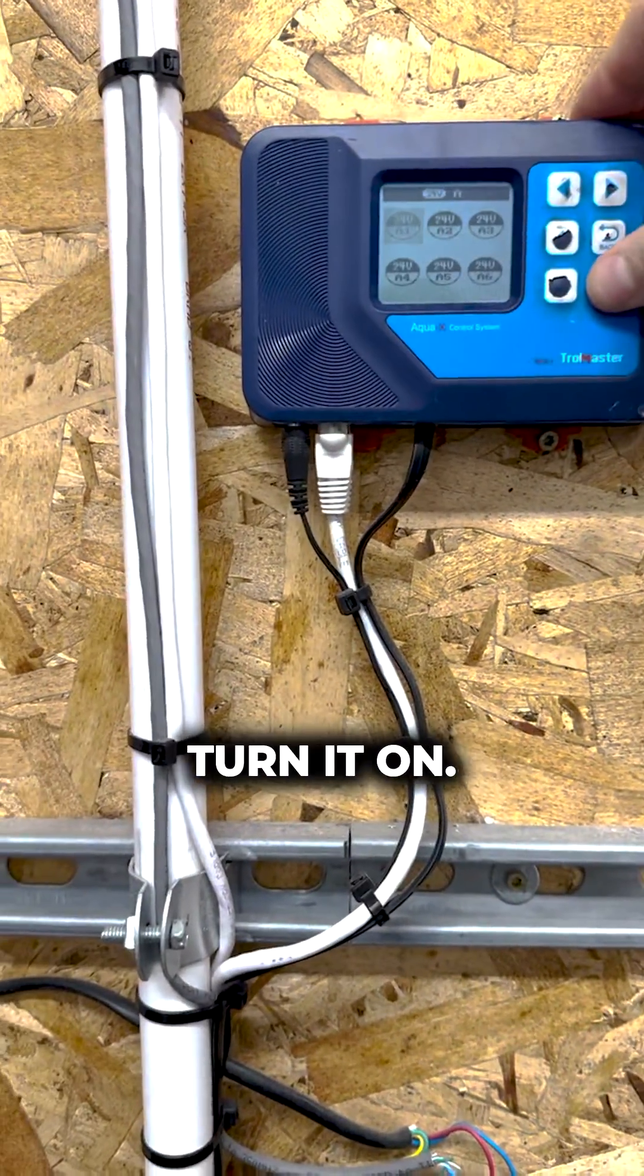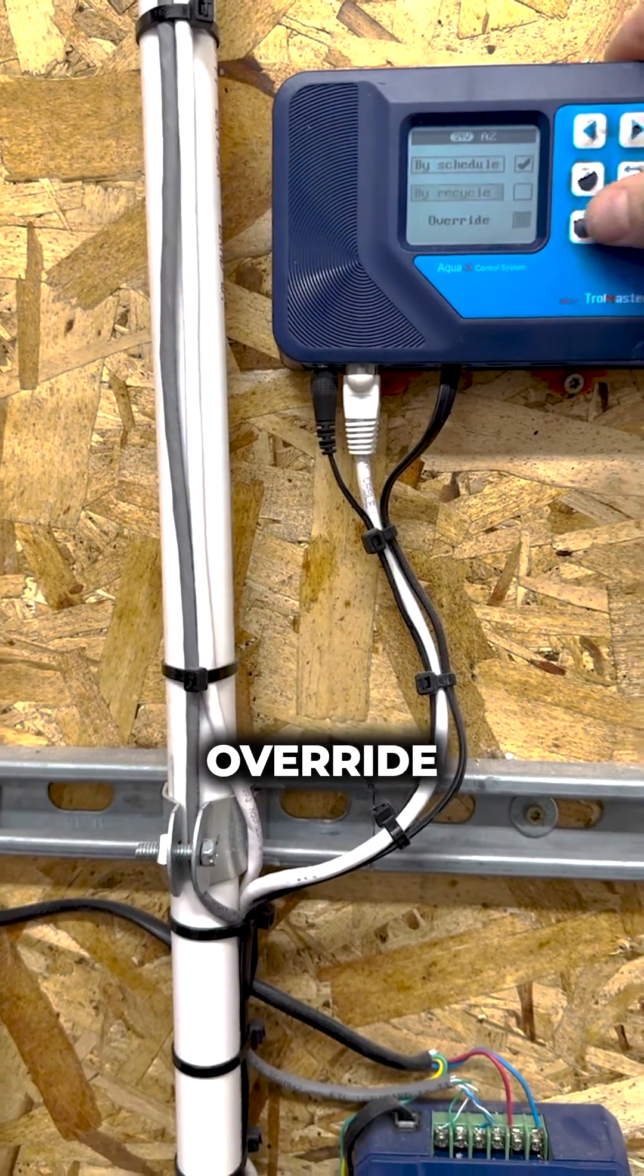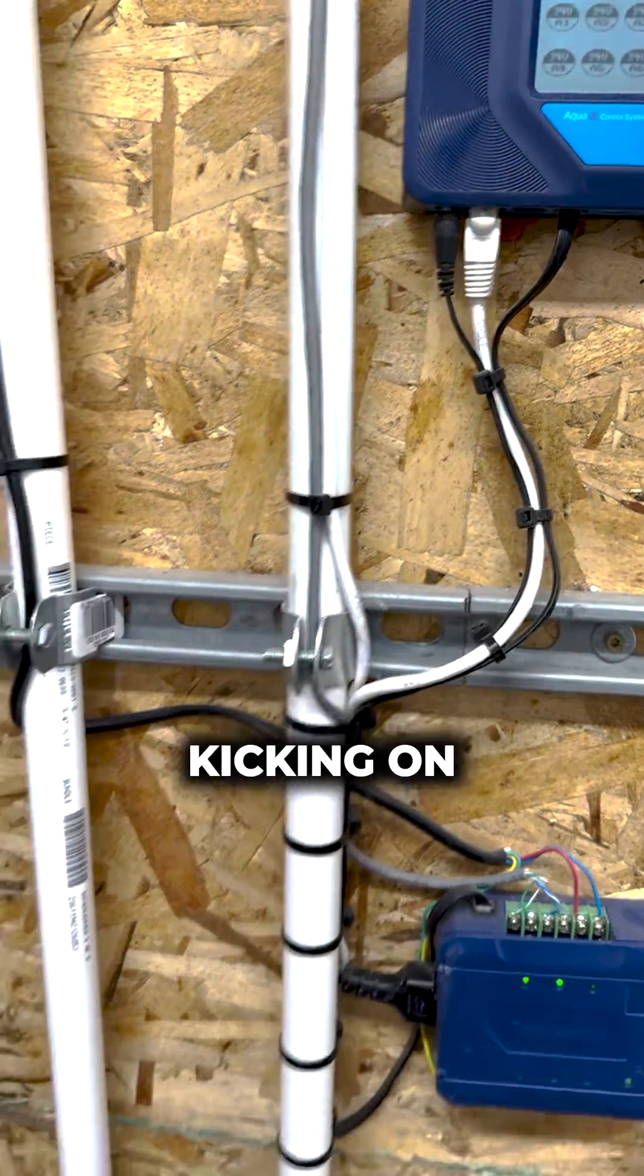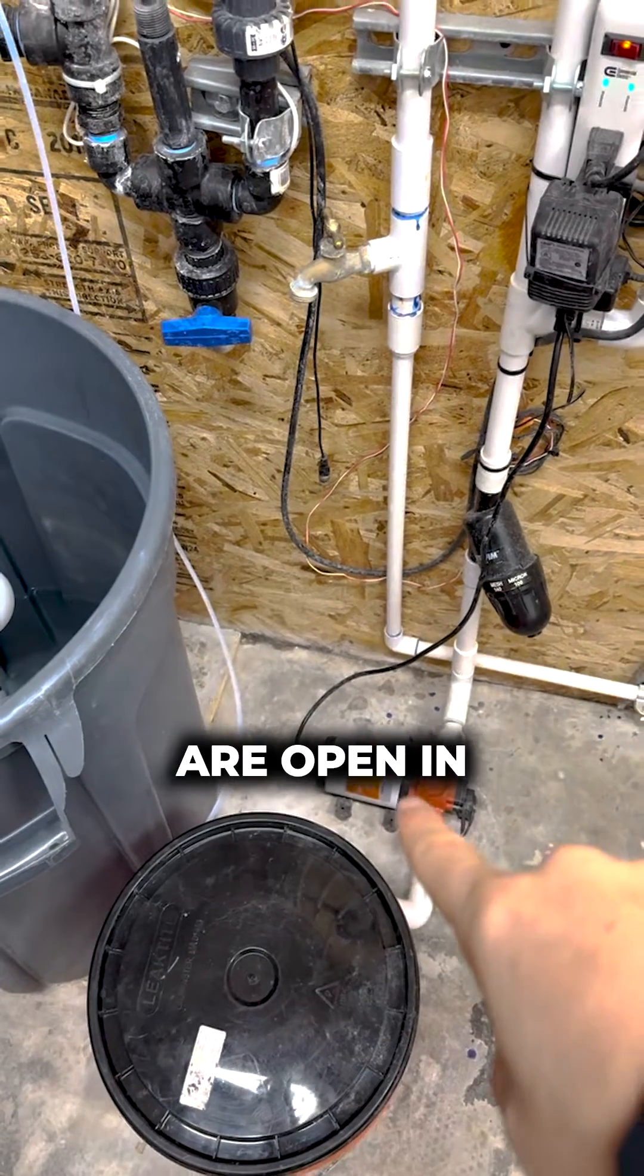Here's the AquaX. We want to turn it on, override Zone 1, override Zone 2. You hear the pump kicking on. The pump is running because zones are open in the room.